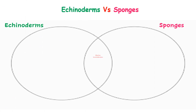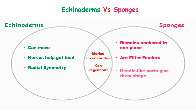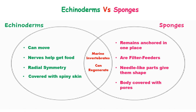Now that you've learned about enkinoderms, let's compare them to sponges. Both enkinoderms and sponges are marine invertebrates. They can regenerate. Enkinoderms can move about the ocean, but sponges remain anchored in one place all their lives.